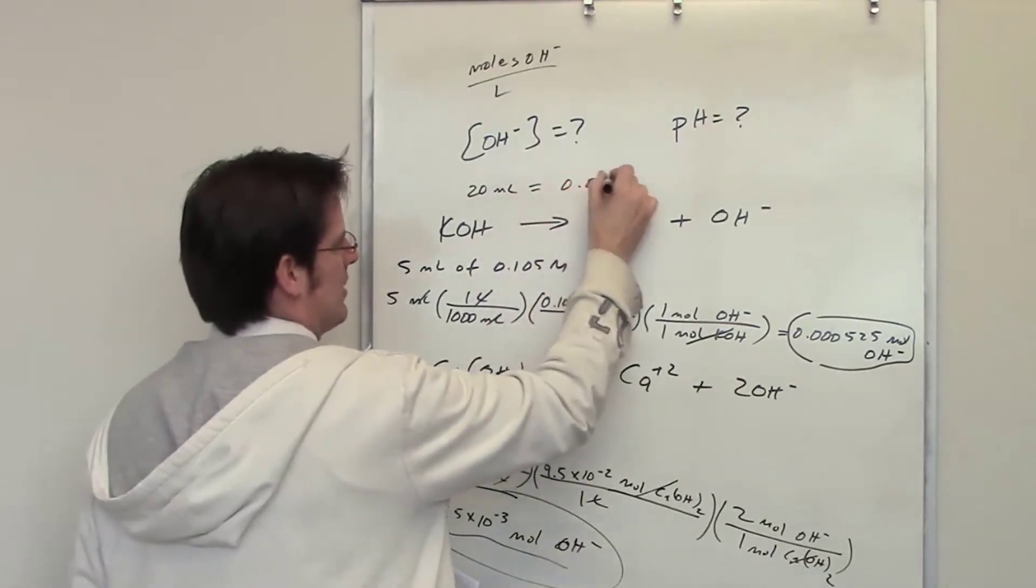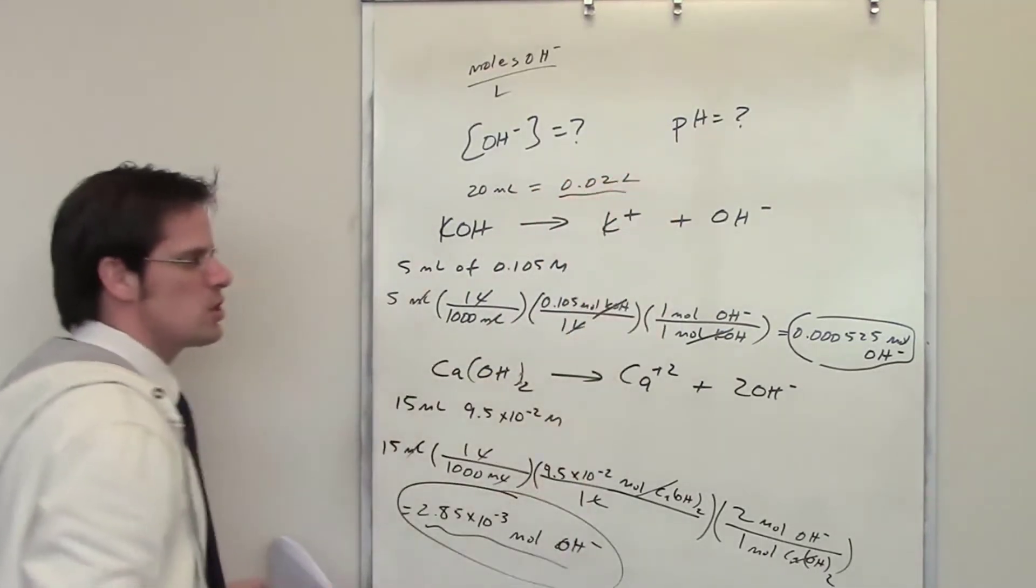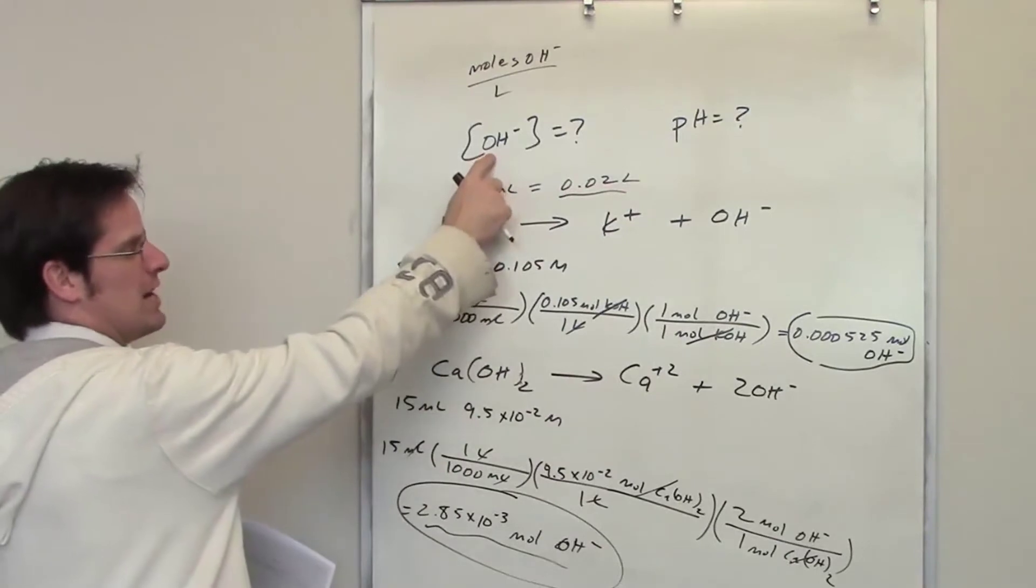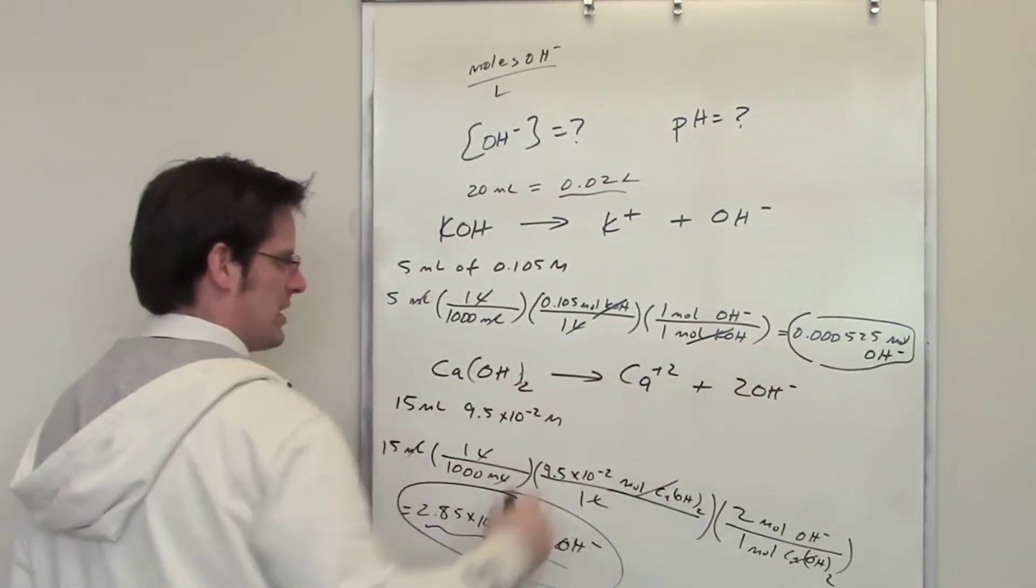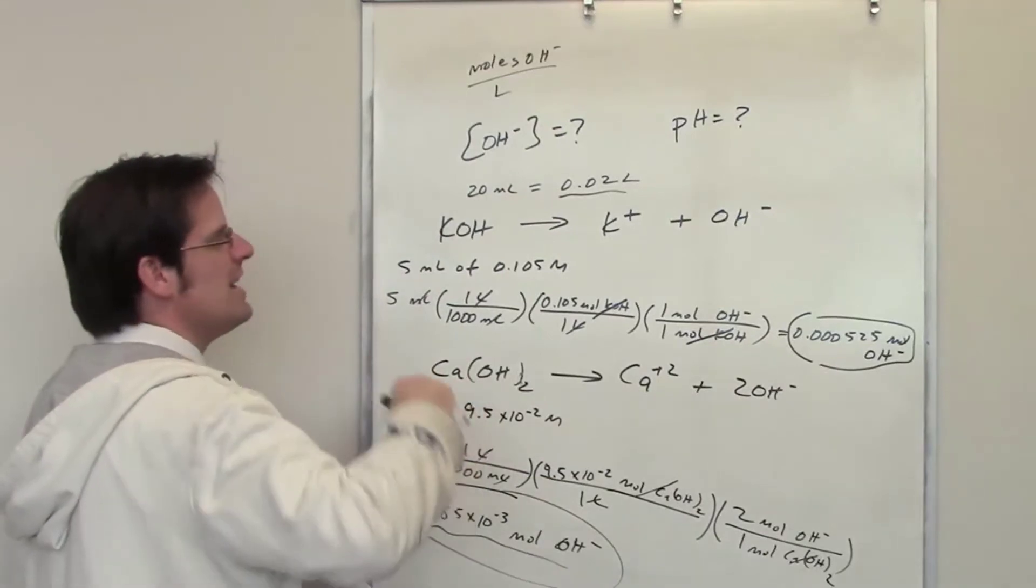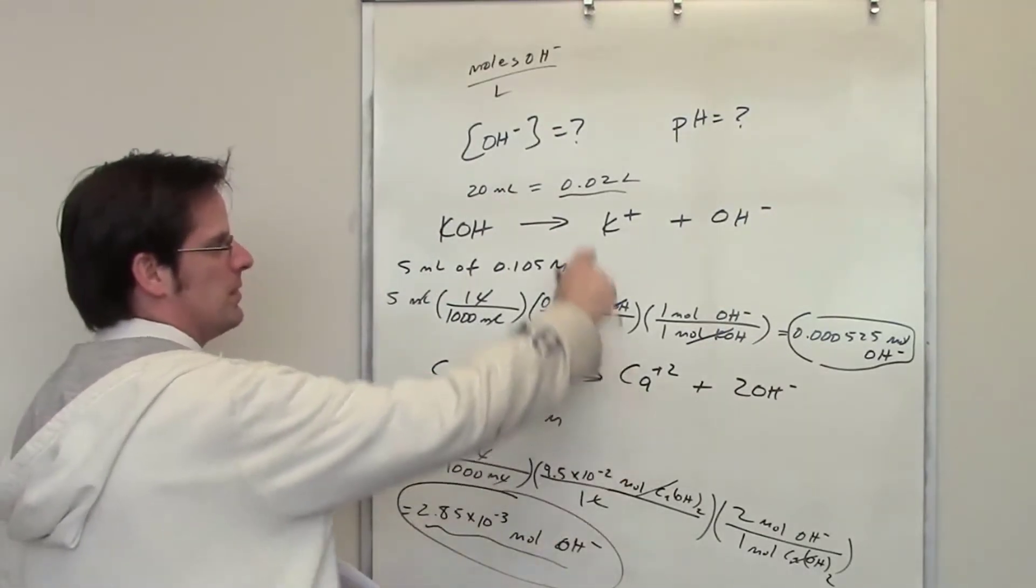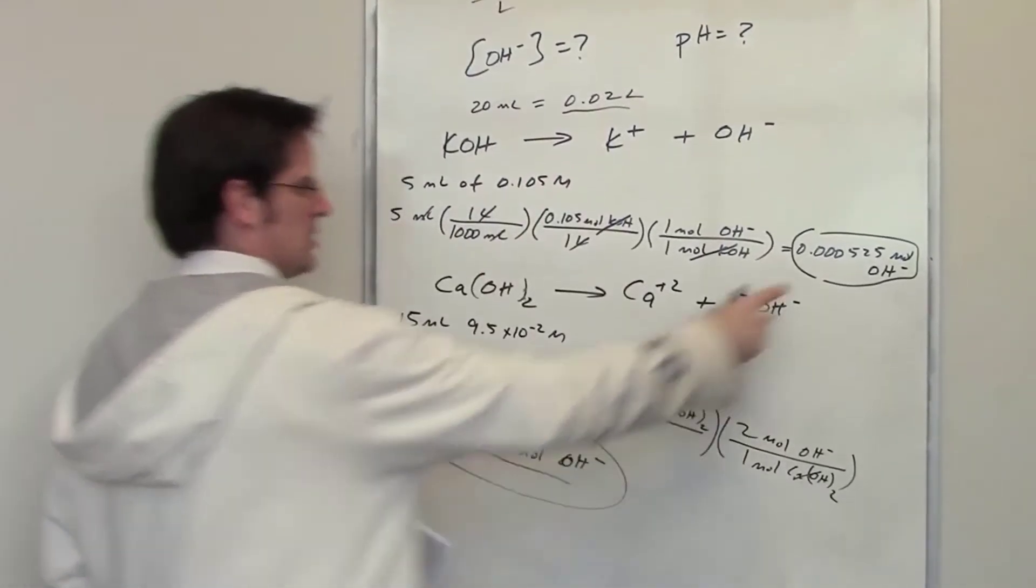How many liters is that? Well, if you're okay with me jumping the gun here, that's 0.02 liters. So what I need to do to determine the concentration of hydroxide is take this many moles of hydroxide plus this many moles of hydroxide, that's the total number of moles of hydroxide, and then divide it by the volume, which is the number of liters right here. So I'll go ahead and do that.